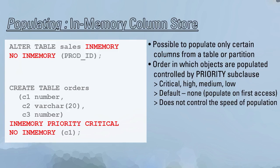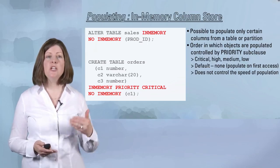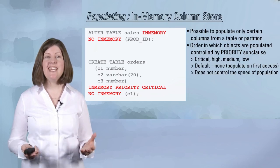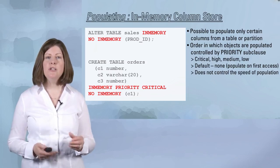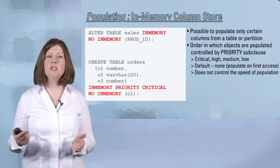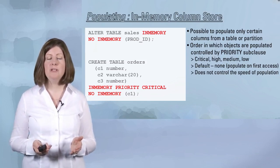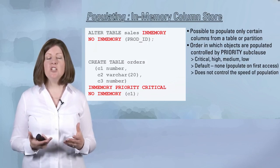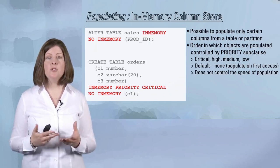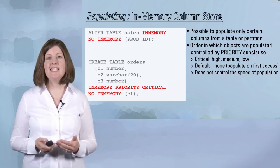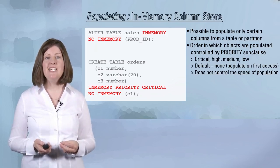Not all of the columns in all of the tables need to be populated into the column store. You do have the ability to exclude some columns from a table during population. You're able to do that by simply doing ALTER TABLE sales IN MEMORY, NO IN MEMORY, open parenthesis, and giving a comma-delimited list of the columns you don't wish to have populated in memory. That is going to allow you to save space in the column store by not having infrequently accessed columns be populated.